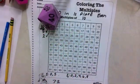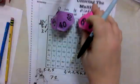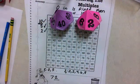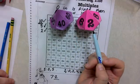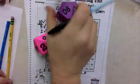And roll again, this time we got a 42. Is it a multiple of 10? No. Why? Because the digit in the ones place is a 2, not a 0.